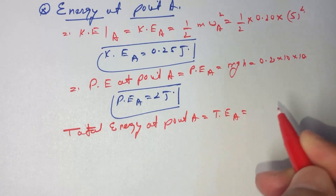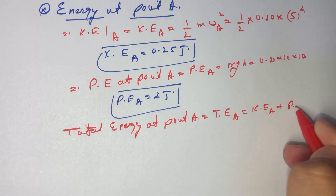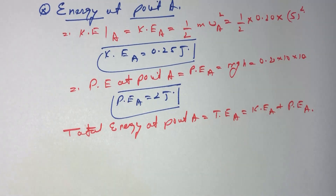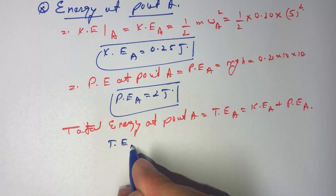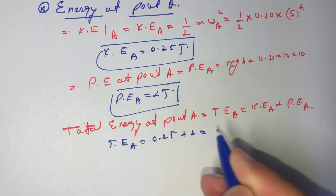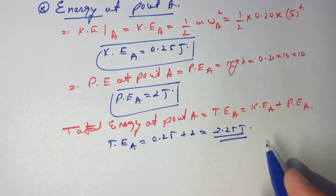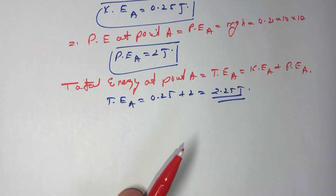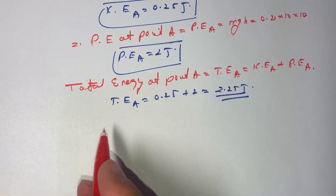Total energy at point A equals kinetic energy at A plus potential energy at A. Substituting the respective values, total energy at A equals 0.25 plus 2, which equals 2.25 joules. This is the total energy at point A.